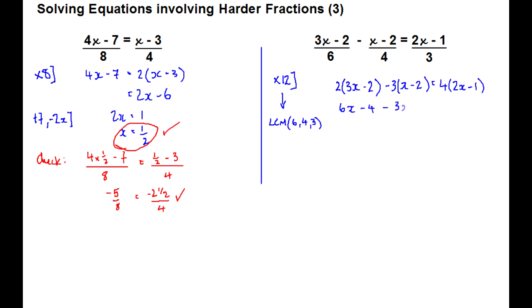And expand the brackets, and then simplify our terms, and we're left with a situation that we should be well accustomed to by now. We've got an equation with x on both sides. So take away 3x, add the 4, and that gives us 5x is equal to 6. x is 6 over 5.